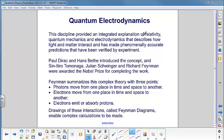This provided an integrated explanation of relativity, quantum mechanics and electrodynamics, which is electromagnetism, that describes how light and matter interact and has made phenomenally accurate predictions that have been verified by experiment. It's probably one of the most proved theories of this century.